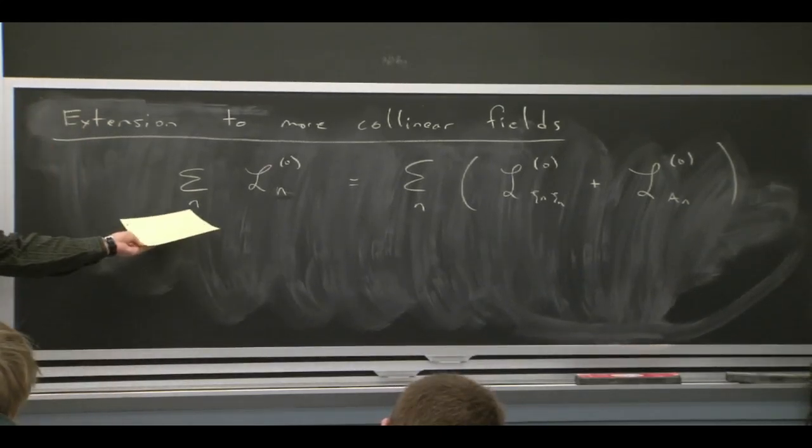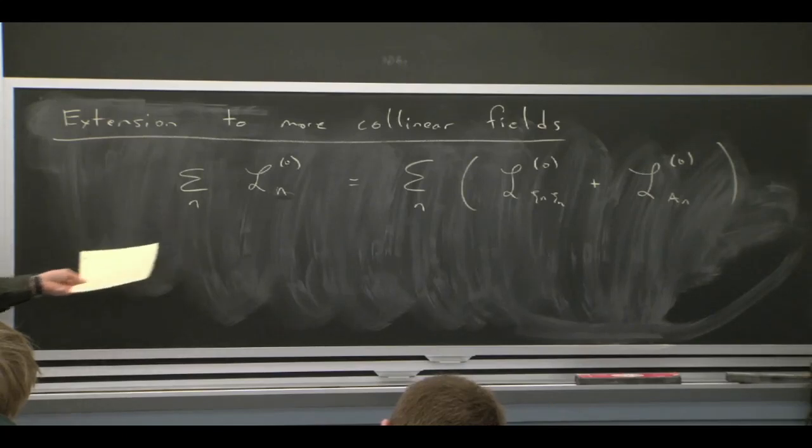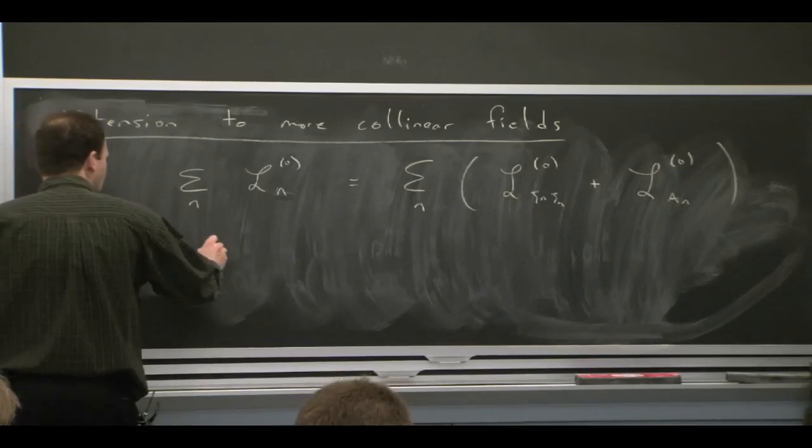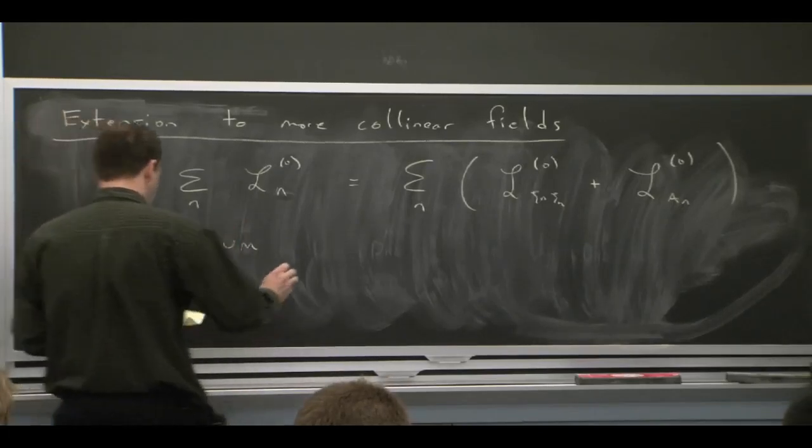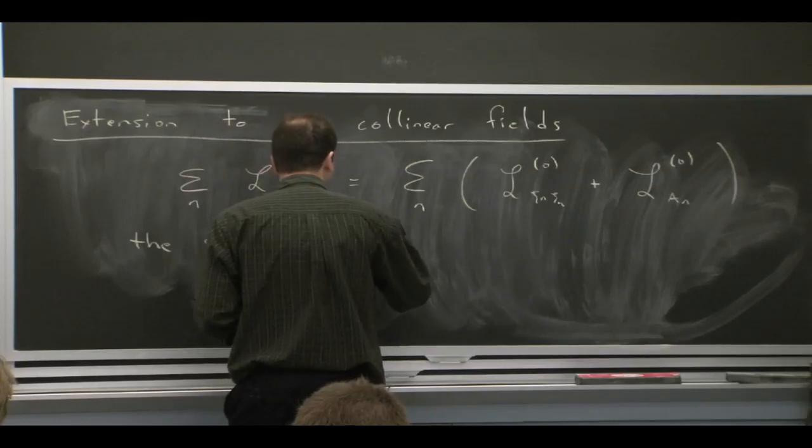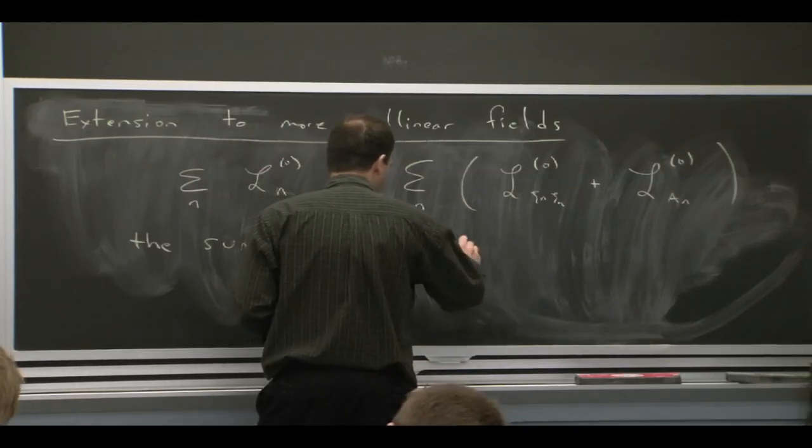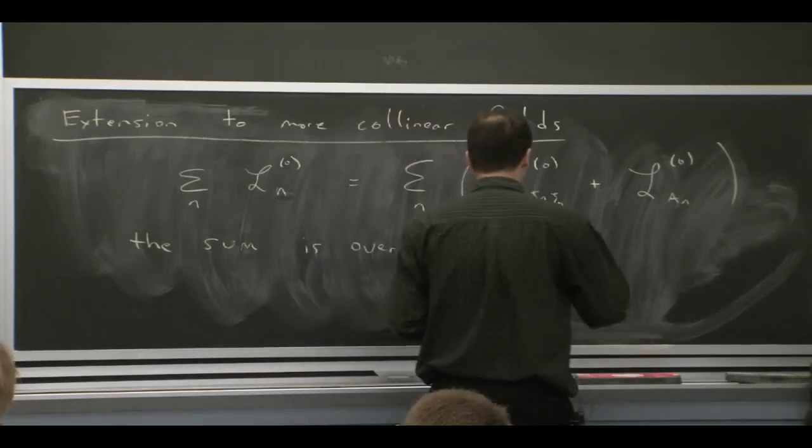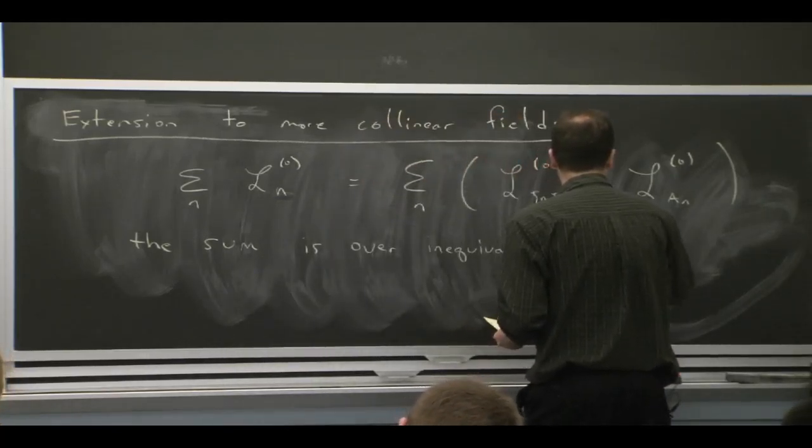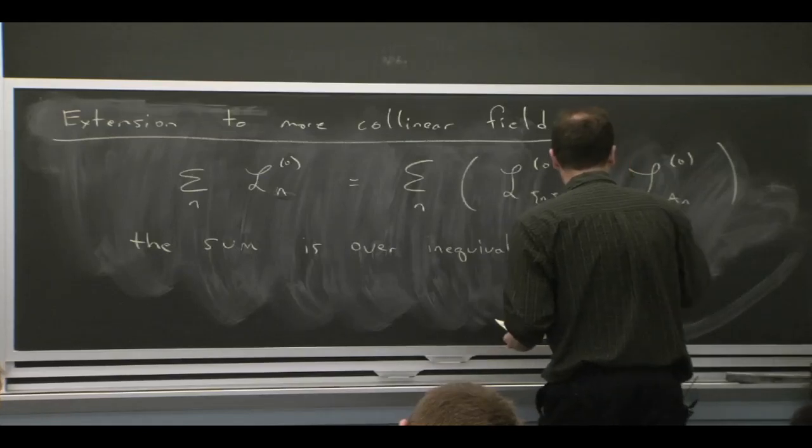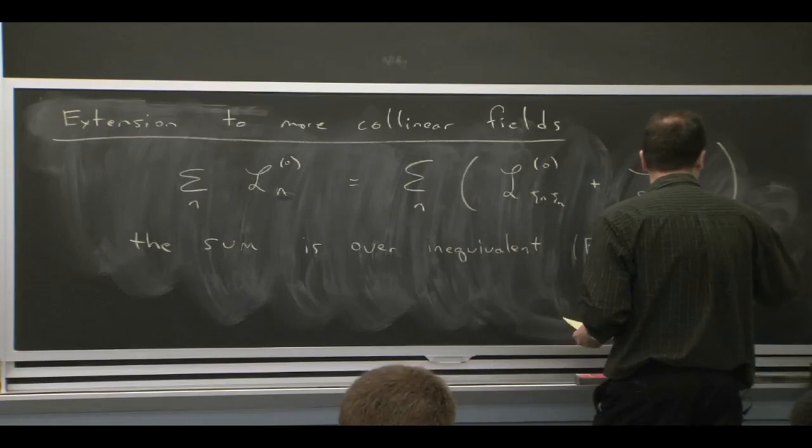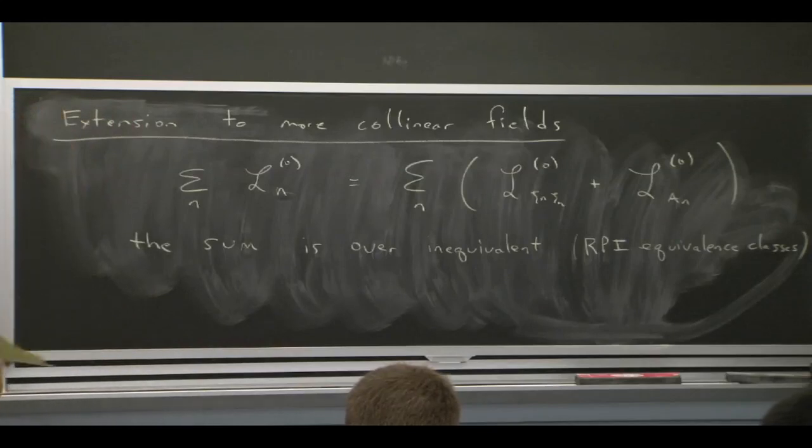So the question is, what does it mean, sum over n? What is the distinction between collinear fields? And so here's the words, and then we'll explain what they mean. The sum is over inequivalent n's, though that should be obvious that they have to be inequivalent. But what makes them inequivalent is the fact that they are RPI equivalence classes. So that's a funny sentence, inequivalent RPI equivalence classes.